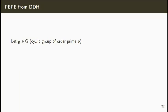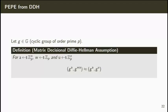We now show the underlying ideas of our DDH-based construction. Let G be a generator of a cyclic group of order P. Recall that the DDH assumption states that given G to the A, where A is a uniform random ZP vector, the distribution of G to the WA for a uniform random ZP value W is computationally indistinguishable from the distribution of G to the U for a uniform random vector U.